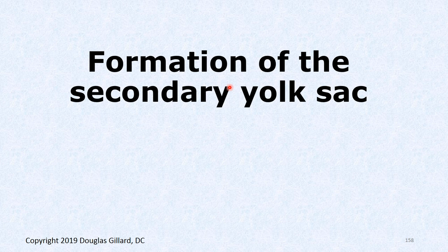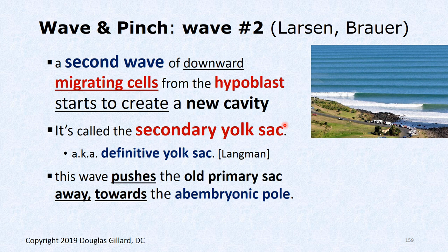Formation of the secondary yolk sac was a tough story to figure out since we don't have many human embryos to work with — researchers rely on primates and birds. Now the second wave: just as a first wave of cells came from the hypoblast to make Heuser's membrane, a second wave now comes down on top of Heuser's membrane and gives rise to the secondary yolk sac.